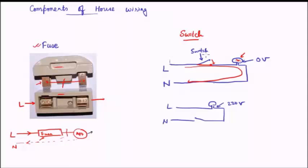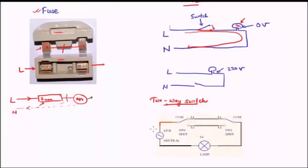Next we will see what is known as a two-way switch. The concept is similar to a single-way switch in that it is a switch, but a two-way switch is a little different. Let us draw the diagram and see. The same lamp can be switched on or off from two different locations — that is, from two different switches. We have the live wire, then a discontinuation where the two-way switch exists, and it further goes through the lamp and the neutral wire, completing the circuit.